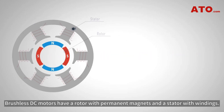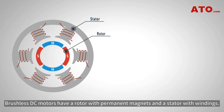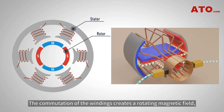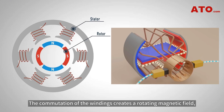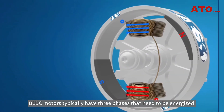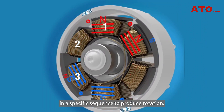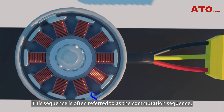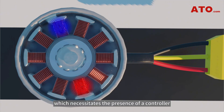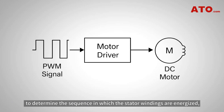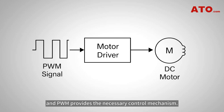Brushless DC motors have a rotor with permanent magnets and a stator with windings. These motors rely on electronic commutation. The commutation of the windings creates a rotating magnetic field driving the rotor. BLDC motors typically have three phases that need to be energized in a specific sequence to produce rotation. This sequence is often referred to as the commutation sequence, which necessitates the presence of a controller to determine the sequence in which the stator windings are energized, and PWM provides the necessary control mechanism.